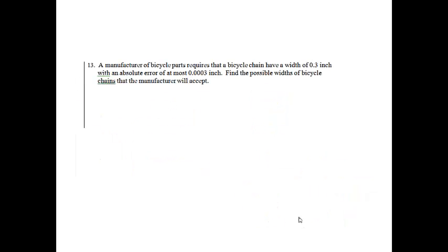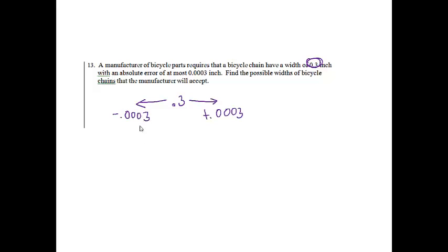Question 13: A manufacturer of bicycle parts requires that a bicycle chain have a width of 0.3 inches with an absolute error of at most 0.0003 inches. Find the possible width of bicycle chains that the manufacturer will accept. I'm going to circle what I want it to be — 0.3. But I can be off in either direction. If I'm off one way, I add 0.0003 to get 0.3003. In the other direction, I subtract 0.0003 to get 0.2997 inches. It could be anything between those two values.